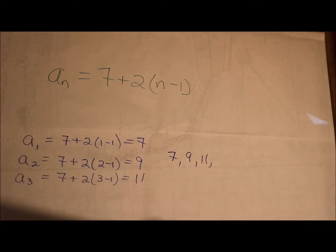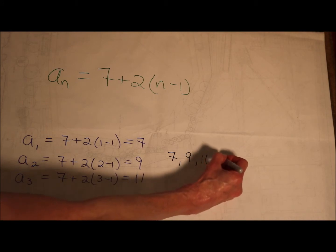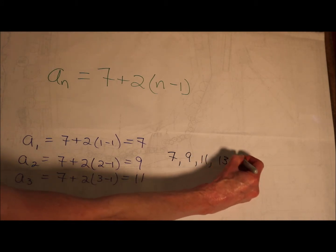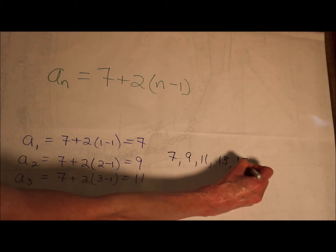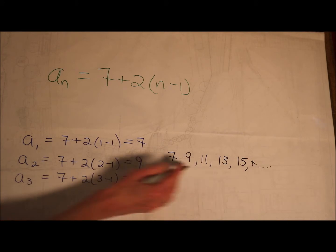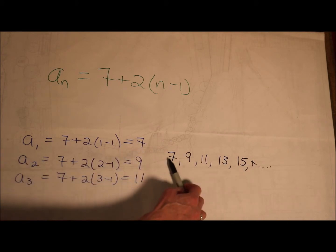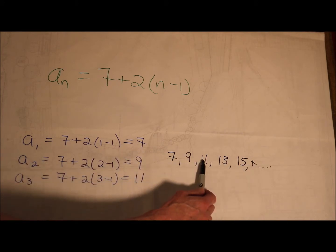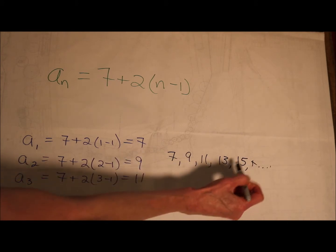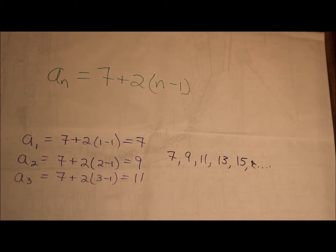What's going to come next? At this point I don't need the equation — I just see the pattern. I see that I am just doing plus 2, plus 2, plus 2, plus 2, and I'm getting an arithmetic sequence.